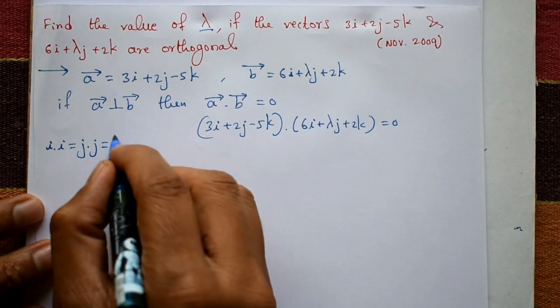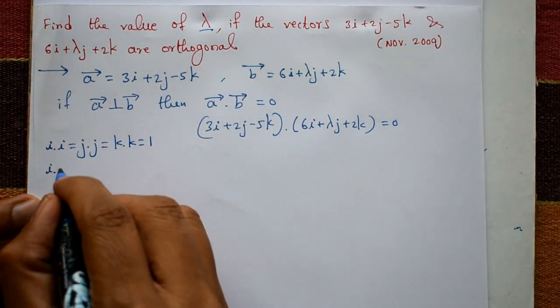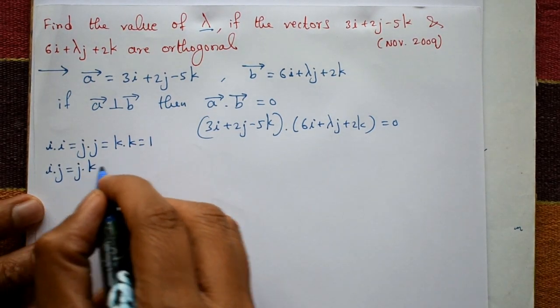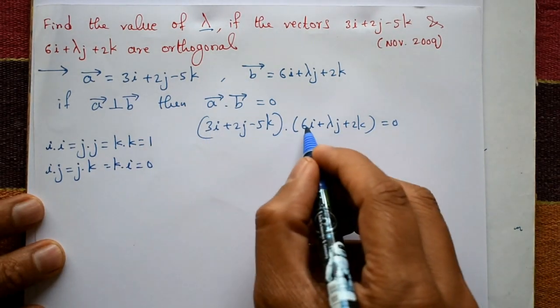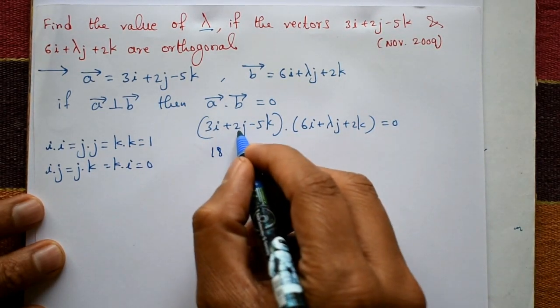Now i into j, j into k, and k into i is 0. Now take i into i only: 3 into 6 is 18, 2 into lambda is plus 2 lambda, minus 5 and 2, plus 5 okay, this is minus 10.